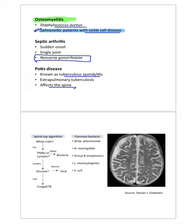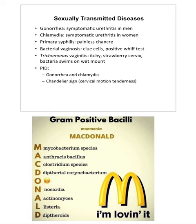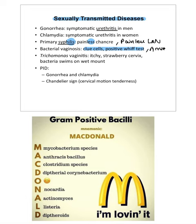Meningitis causes by age: in babies, mnemonic 'Baby Applied Gel' — G = Group B Streptococcus, E = E. coli, L = Listeria monocytogenes. Also S. pneumoniae and N. meningitidis. STIs: gonorrhea — urethritis; syphilis — painless ulcer with painless lymphadenopathy. Bacterial vaginosis — clue cells, Amsel's criteria. Trichomonas vaginalis — strawberry cervix, very itchy. PID — due to gonorrhea and Chlamydia; chandelier sign = cervical motion tenderness.